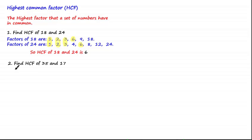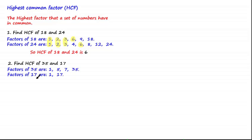Let's have a look at another example. We're asked to find the highest common factor of 35 and 17, so we list the factors of each. The factors of 35 are 1, 5, 7, and 35. The factors of 17 are 1 and 17 — as 17 is a prime number. Comparing the factors, the only factor shared in common between 35 and 17 is 1, so the highest common factor of 35 and 17 is 1.